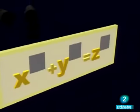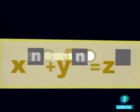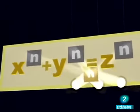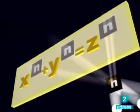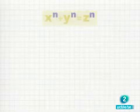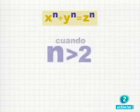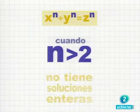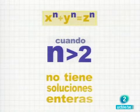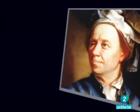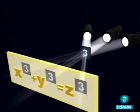Pero también se atrevió con el más conocido y recientemente demostrado último teorema de Fermat. No existen tres números enteros, X, Y y Z, que verifiquen que X elevado a N más Y elevado a N sea igual a Z elevado a N cuando N es mayor que 2. Pues bien, aunque Euler esta vez no logró demostrar el teorema, al menos nos dejó las demostraciones cuando N es igual a 3 y N es igual a 4.